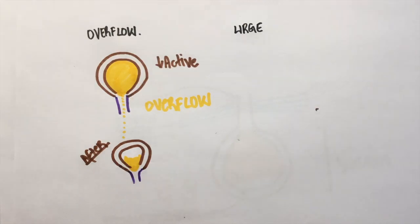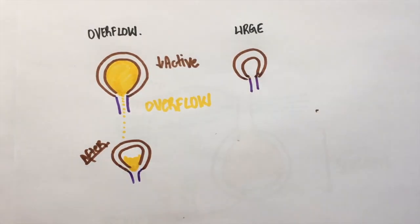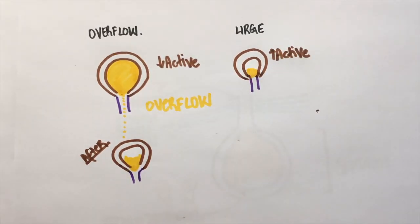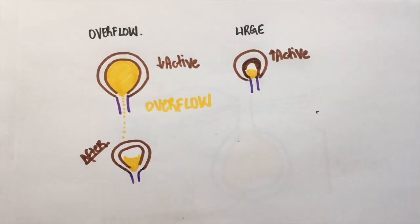In urge incontinence, the bladder is hyperactive, which means it contracts more than it's supposed to. When the bladder contracts, the patient has a high urge to urinate. Patients often complain that the amount of urination is very little. This is because even before the bladder has a lot of urine in it, it contracts, so very little urine comes out.